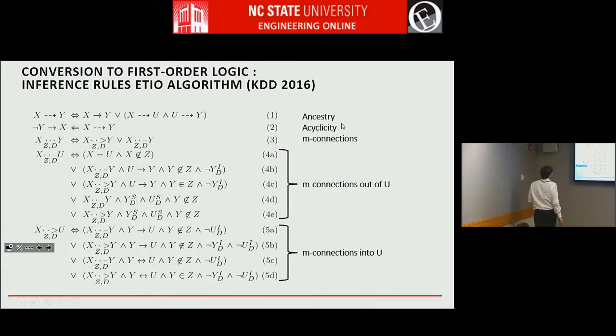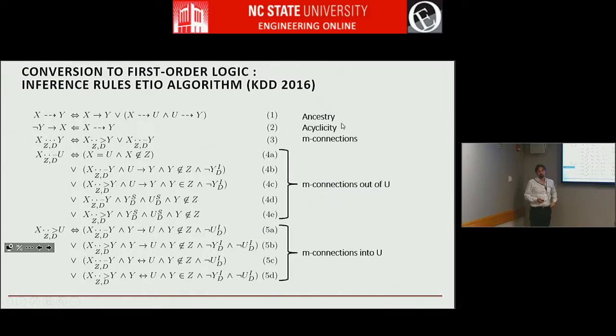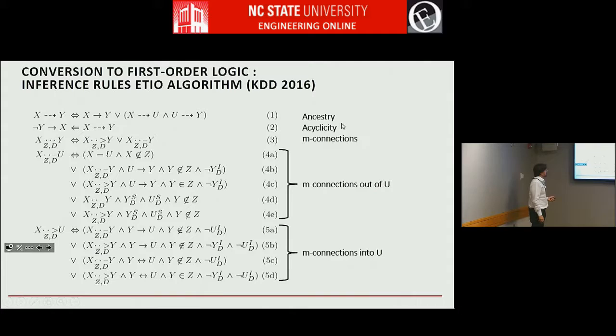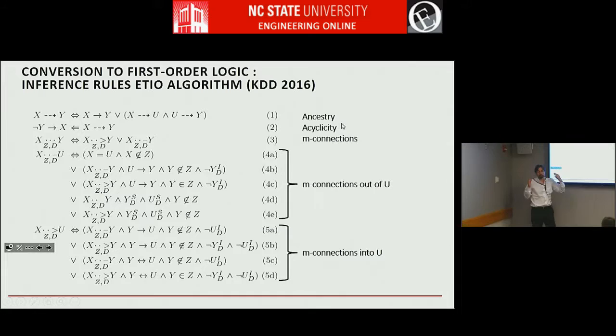This complicated problem is solved with a 10-line logic program that encodes the definition of M-connections as a mathematical definition expressed as a logic program. We also impose constraints on ancestry and acyclicity. You solve this problem, and some of these variables will take the value of true or false, meaning they have to be present in any solution.